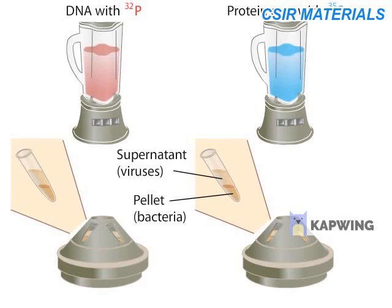In each of these samples, the radioactive component will be in a different fraction, either the pellet or the supernatant. If DNA is in fact the genetic material, predict which of the two tubes, the one with P32 or the one with S35, will have a radioactive pellet.